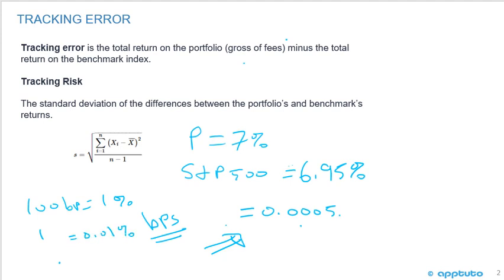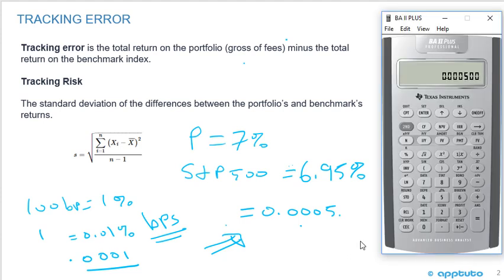So just remember, 100 basis points equals 1%. One basis point equals 0.01%, that's one one-hundredth of a percent. But in decimal form, that is going to be 0.0001. Bring up the calculator - 0.01, and we hit the percentage, you can see 0.0001.